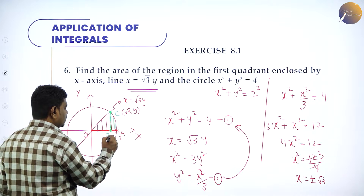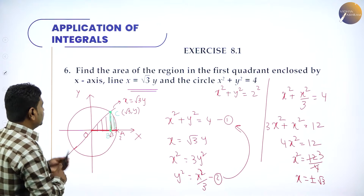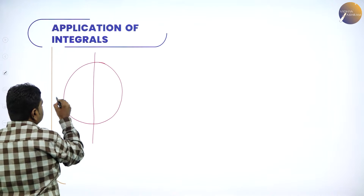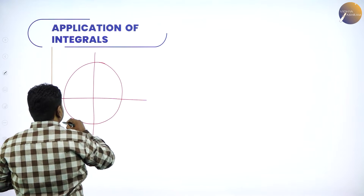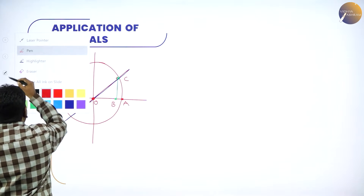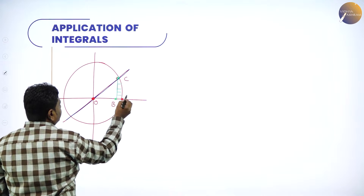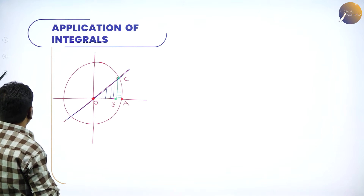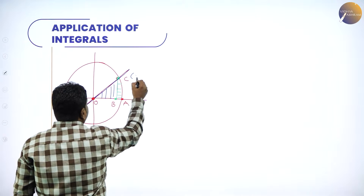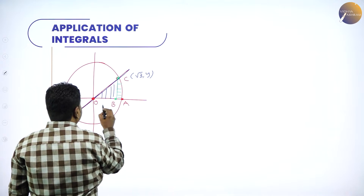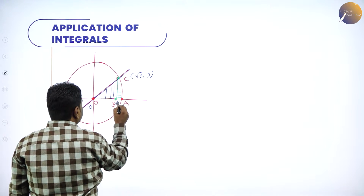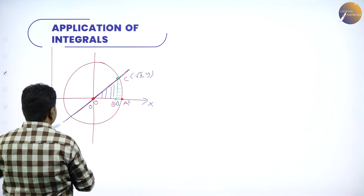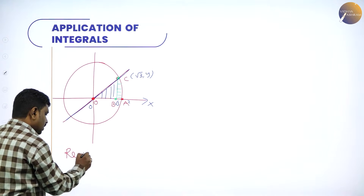Now I can divide the total area into two parts: from 0 to √3 (area between the line and x-axis) and from √3 to 2 (area between the circle and x-axis). The point B is at √3, the radius endpoint is at 2 on the x-axis. So the required area is the sum of these two parts.